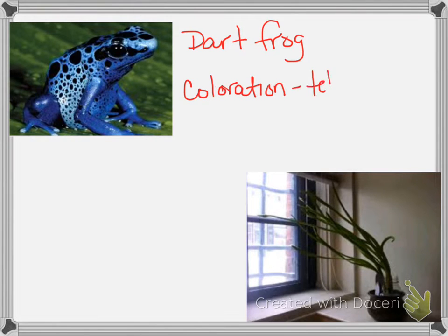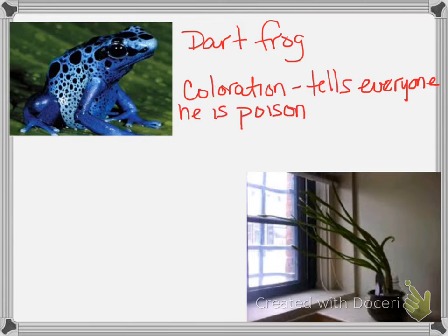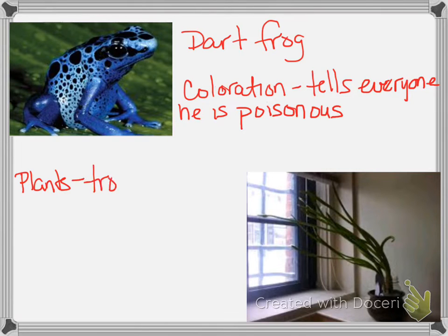The dart frog's coloration is a warning — it's saying, 'Stay away from me, I am poisonous.' So it warns everybody to stay away. Next we have plants, and you can see this plant bending towards the light. That is called tropism, and that is an adaptation that plants have.